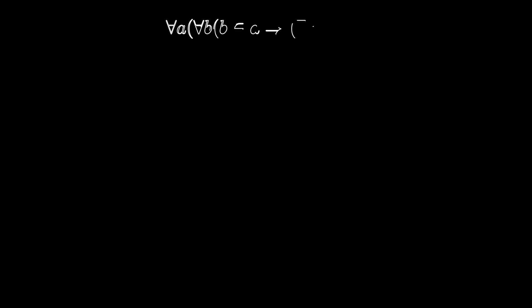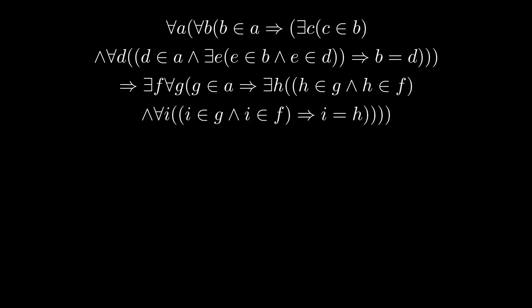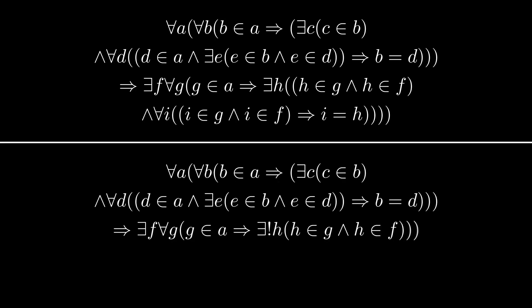As an example, the axiom of choice from the last video can be rephrased in terms of this exists unique to make the statement shorter, like so. Here, this whole section of the expression has been shortened to just this. I left both of these out of the first logic video because they're a little ambiguous, but they'll still be useful to us in the videos to come.